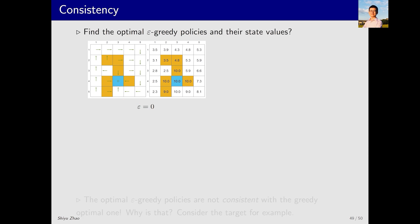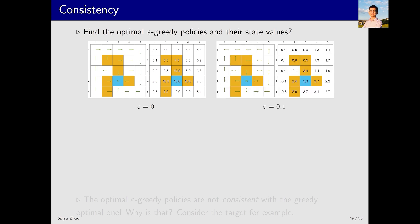Next, we will use the MC epsilon greedy algorithm to solve some examples, and we will see an interesting property. First, here's the example. I directly give the optimal policy, which is greedy. This is the corresponding optimal state value. Then, applying the MC epsilon greedy algorithm and setting epsilon to 0.1, what is the final outcome provided by this algorithm? It is this policy. This policy has a significant relationship with the optimal policy. They are consistent.